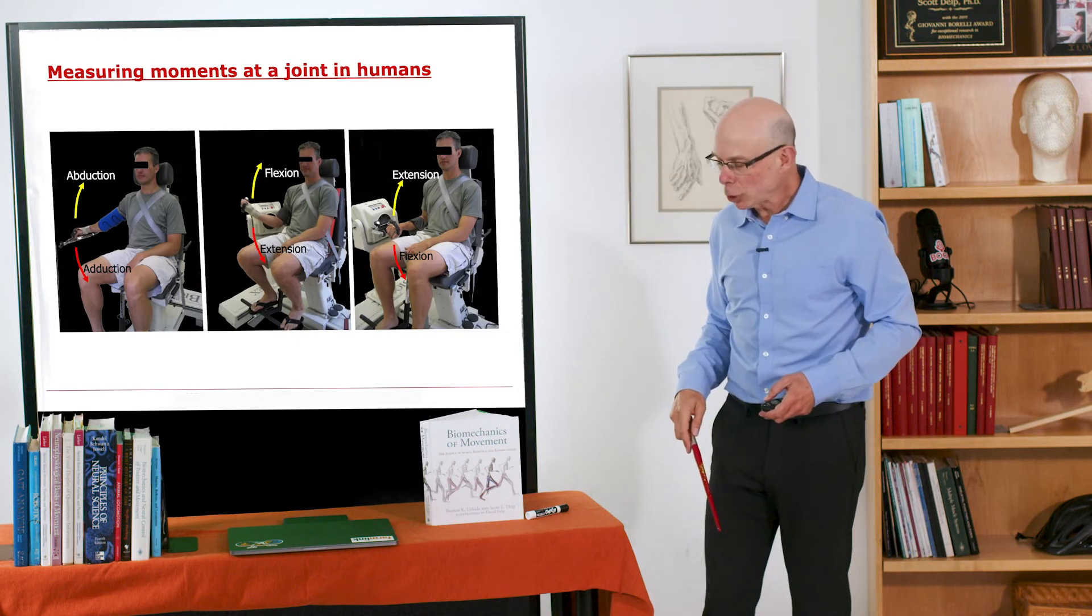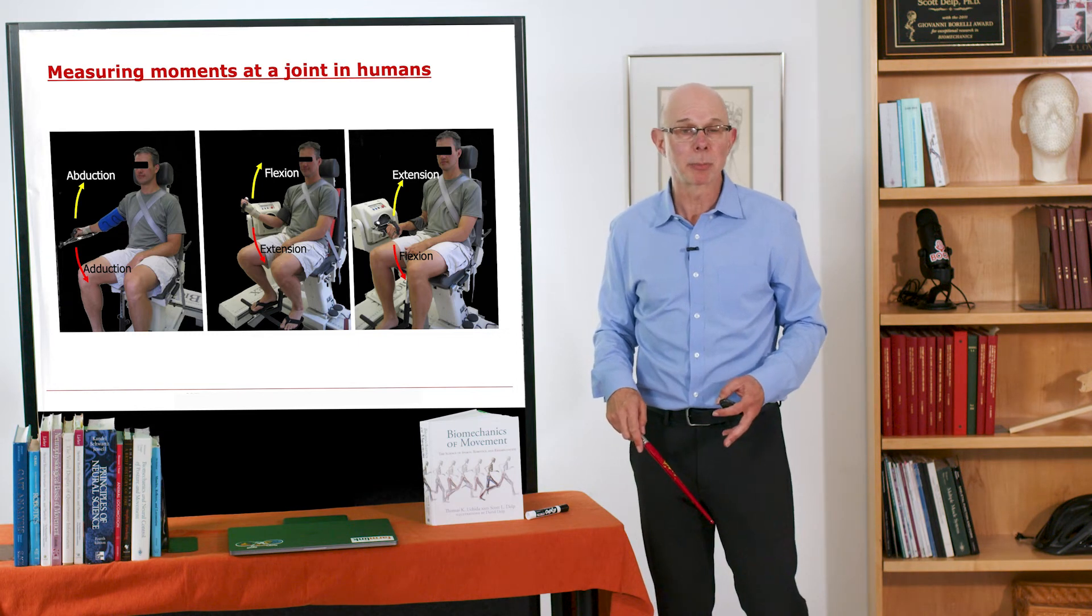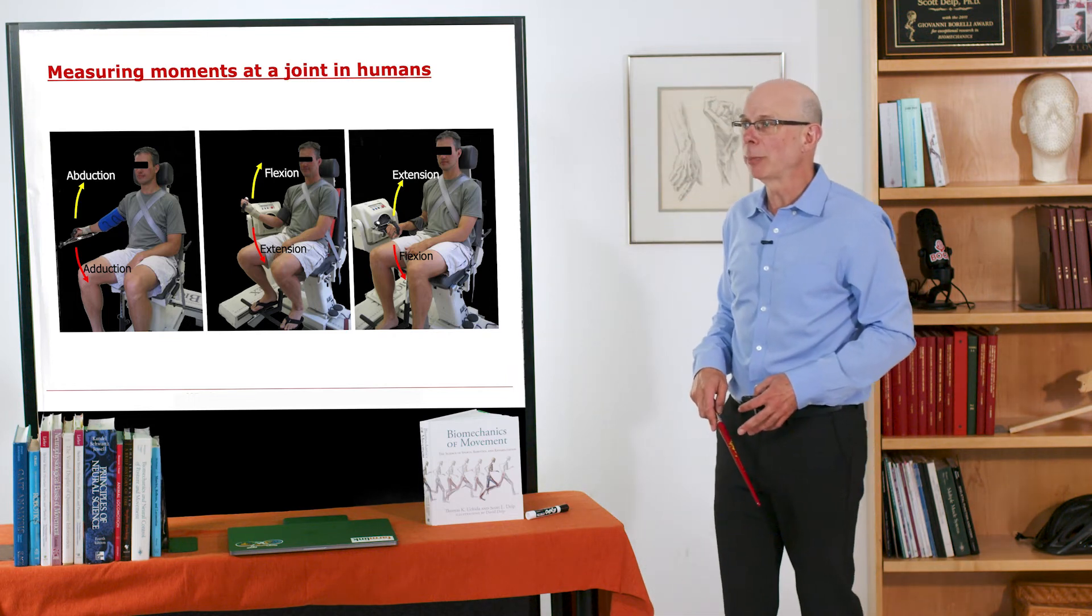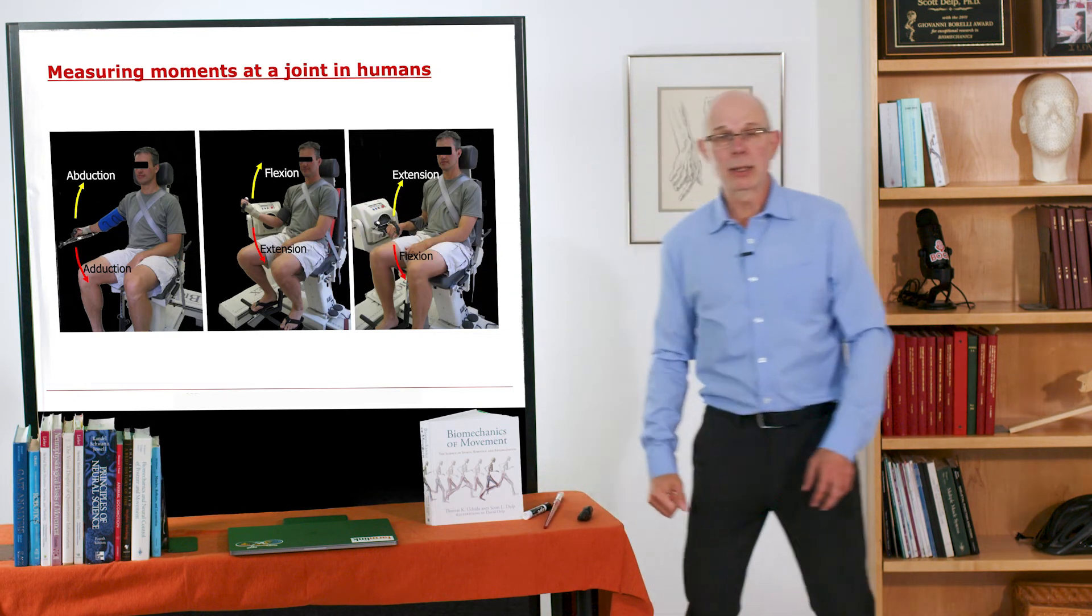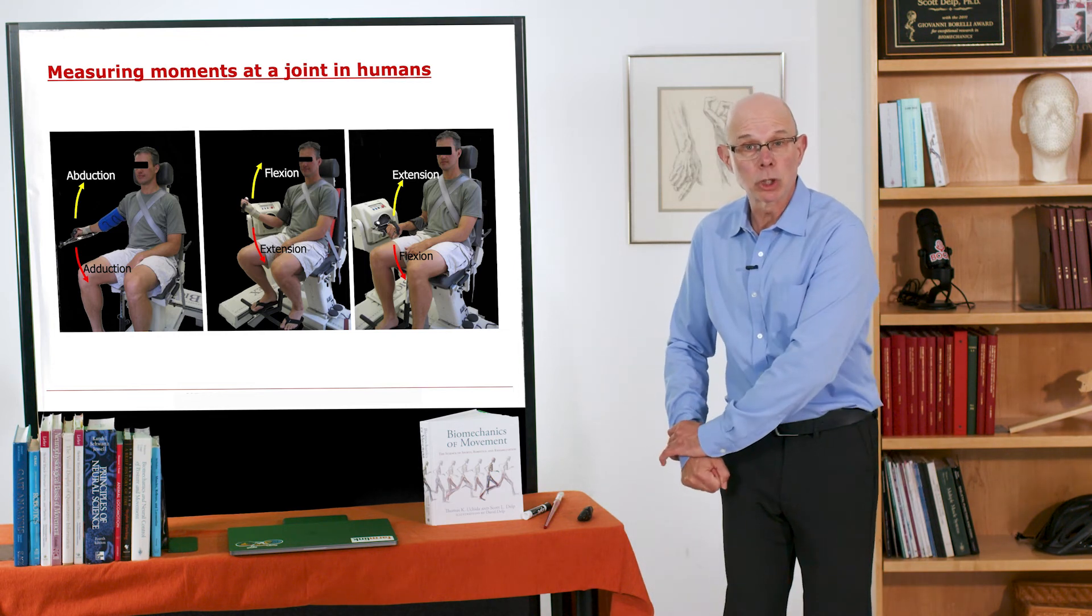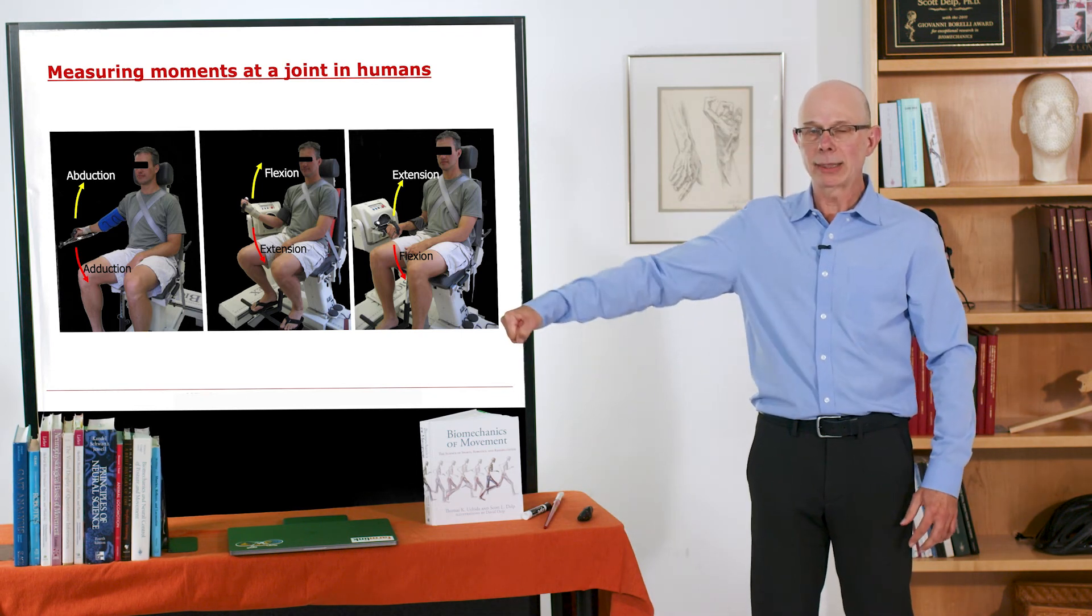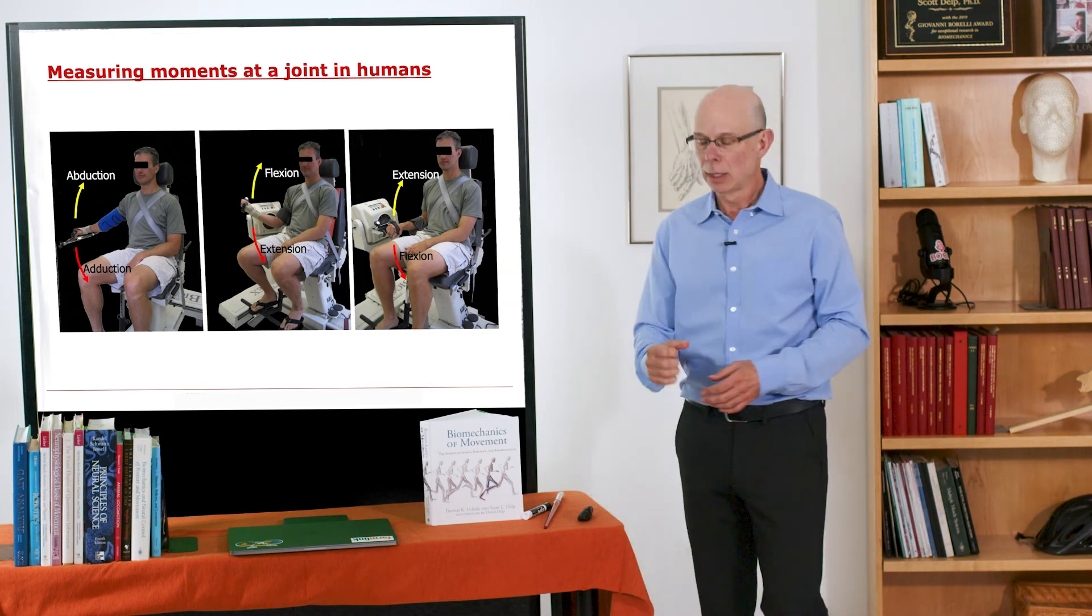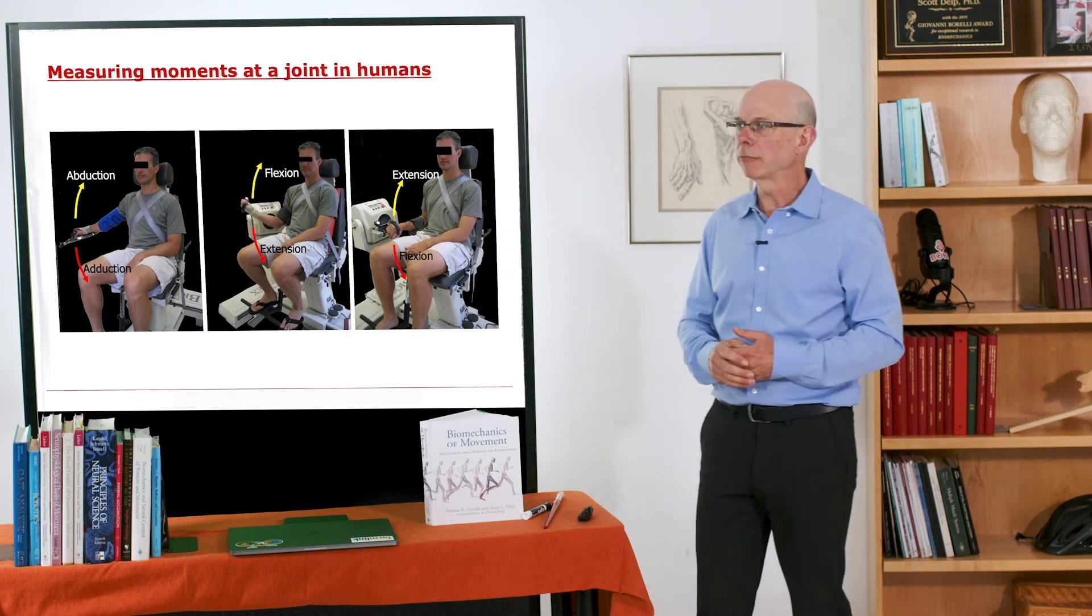So when we measure strength in humans, we're measuring a maximum isometric moment or a maximum concentric moment or a maximum eccentric moment. I'll show you maximum isometric moments here. So in this setup here, we are measuring the shoulder abduction moments. We put an individual in a device, we put a load cell about the limb, and then we measure how much force he can generate. At the end of that limb, we know what the moment arm is, and so we can estimate the moment generating capacity. Same thing for elbow flexion that you see in the middle and for elbow extension and flexion shown here.